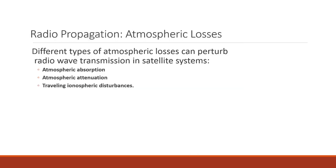Radio propagation and atmospheric losses are correlated. The three types of atmospheric losses that disturb radio wave transmission in satellite systems are: atmospheric absorption, atmospheric attenuation, and traveling ionospheric disturbances.